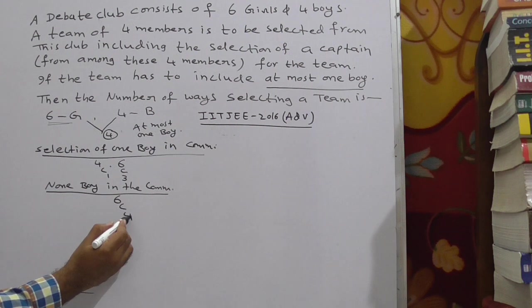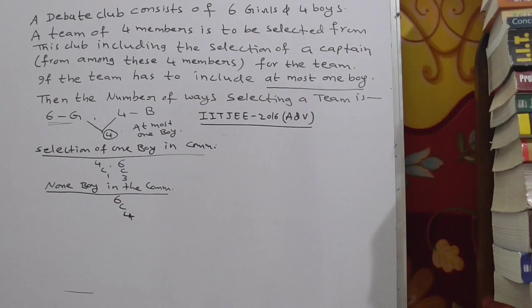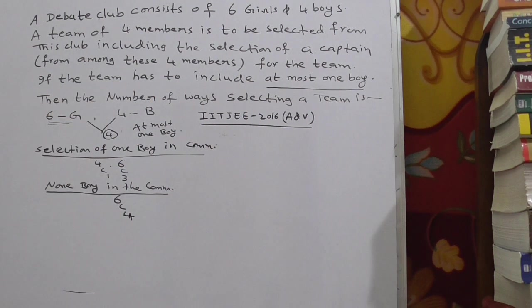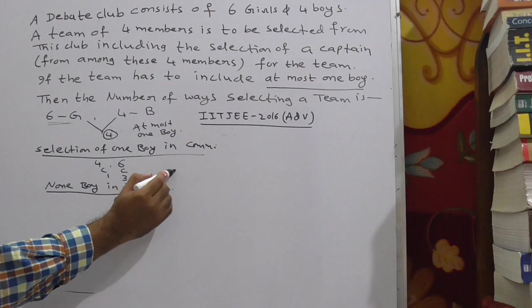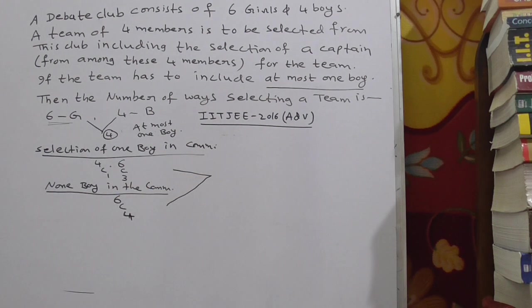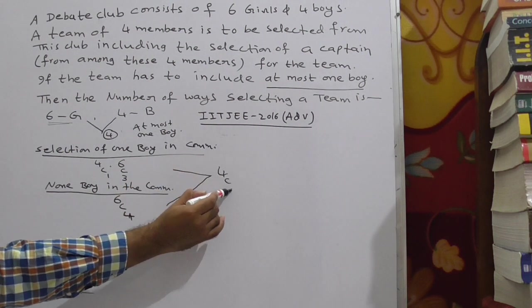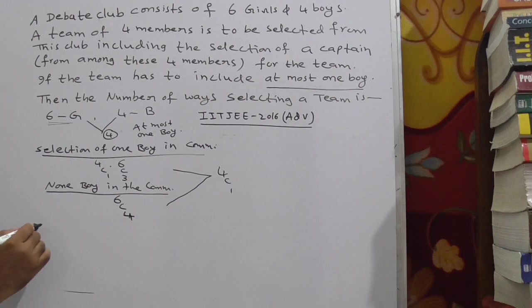So at most 1 boy condition, less than or equal to 1. In the first case, we have selected 1 boy. In the second case, we are not selecting a boy. We are forming a committee from all the girls only. And what is the hidden condition? You have to select a captain from among these 4 members. In first case, we have selected 4. In second also, we have selected 4. So from this 4 only you have to select the captain. The captain can be selected in 4C1 ways. Now observe.